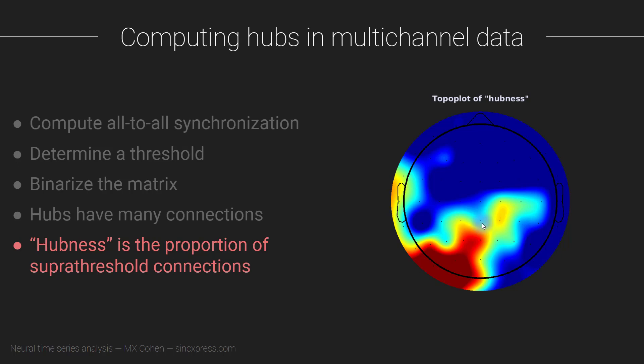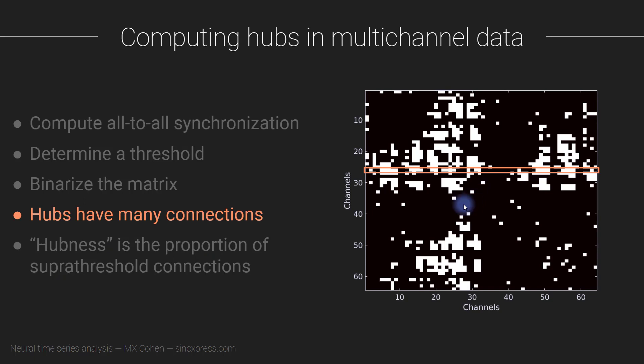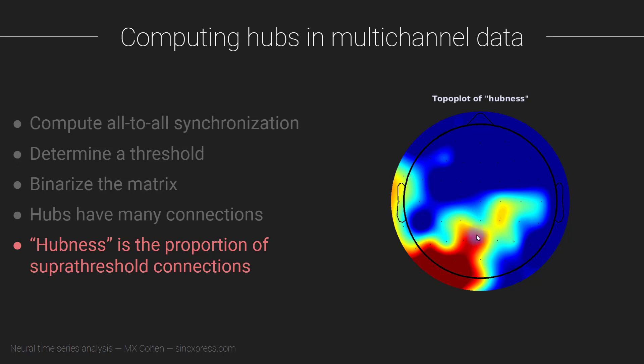That gives you some number, and then you divide that number for each electrode by the total number of connections. We have 63 here - there's 64 electrodes and we exclude the synchronization between each electrode and itself. So the maximum possible number of suprathreshold synchronizations between any one electrode and all others is 63. In practice, many electrodes will have values much smaller than 63. For every channel we have the total number of suprathreshold connections divided by the total number of theoretically possible connections, which gives you a proportion we can call hubness.